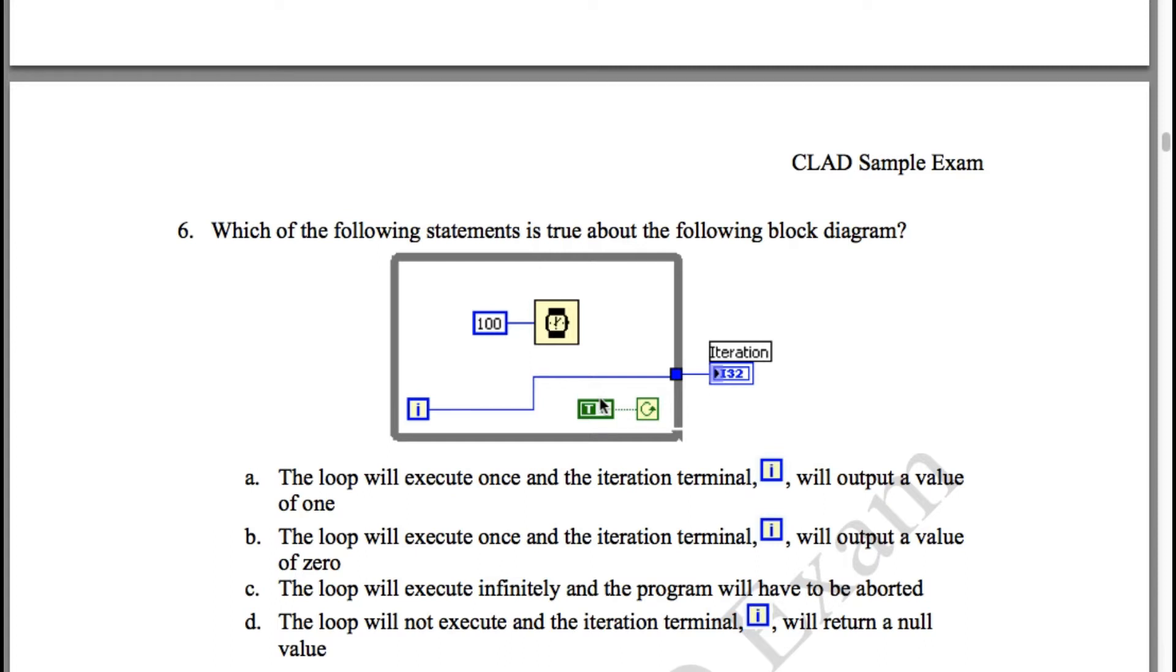So option C: The loop will execute infinitely and the program will have to be aborted. Option C is going to be correct.